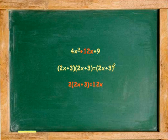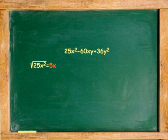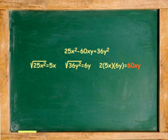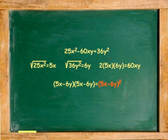As an additional example, factor 25x² − 60xy + 36y². The first term is 25x², the last term is 36y², and the middle term check: 2 times 5x times 6y equals 60xy. Because the middle term of the original trinomial is subtraction, both binomials are subtraction: (5x − 6y)(5x − 6y), or (5x − 6y)².